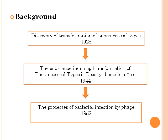There are three very important milestones during the process of DNA research. The first one is Griffith's discovery of transformation of pneumococcal types in 1928. The second one is in 1944, when Avery and his colleagues demonstrated that the substance responsible for transformation of pneumococcal types is DNA. Until 1952, the process of bacterial infection by phage was elucidated and we knew that DNA is the real hereditary material.